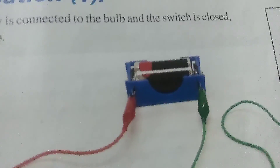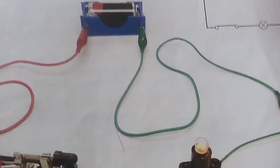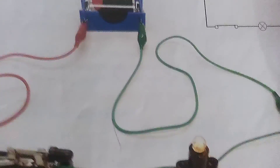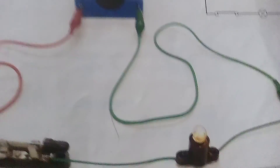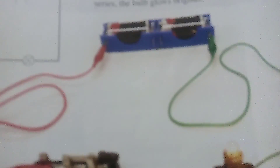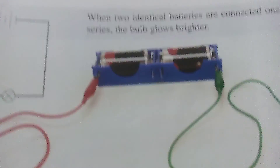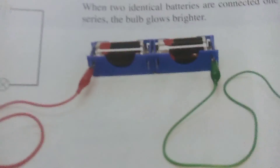This is the battery, also called the energy source. Then wires, one switch, and one bulb. What we have done is that when the electric current flows, the electric bulb will light up. We have attached it in series. After that, in the second part, we have replaced one battery with two batteries. The other components remain the same — the switch, the bulb, and the wires — connected in series.